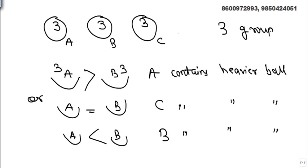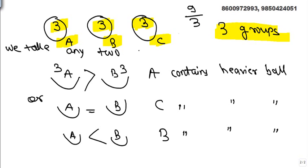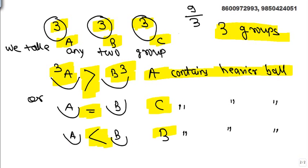So what we did: nine balls, three groups — group A, group B, group C — three balls each. We take any two groups, say A and B, put them on the balance. If A is heavier, A contains the heavy ball; if they are equal, C contains it; if B is heavier, B contains it. We've used the balance once and identified which group contains the heavier ball.